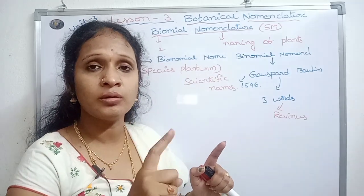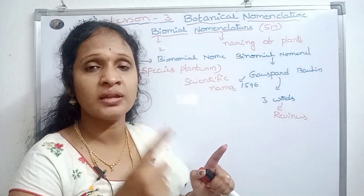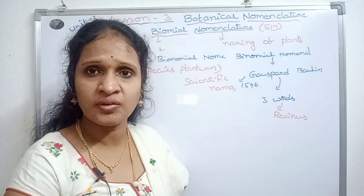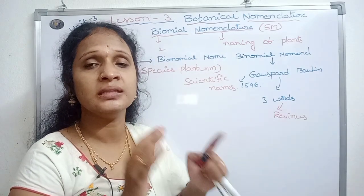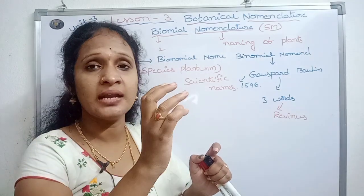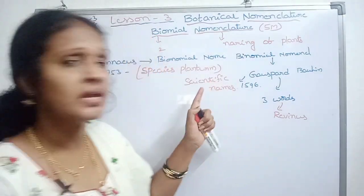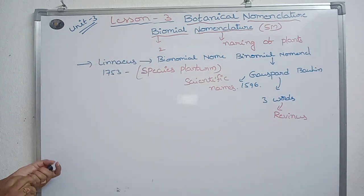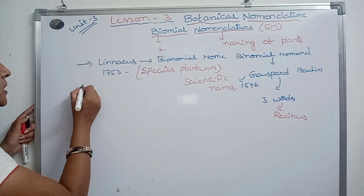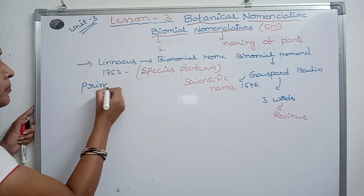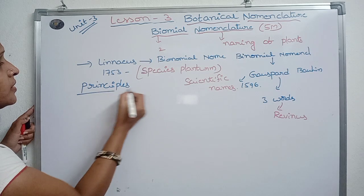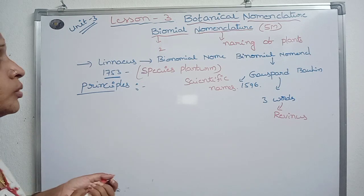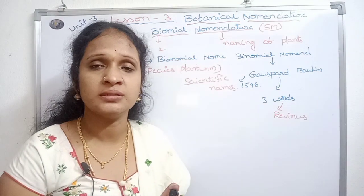For example, mango — Mangifera indica. The binomial nomenclature was formalized by Linnaeus. When you find a name in the book, this is from the year 1753.